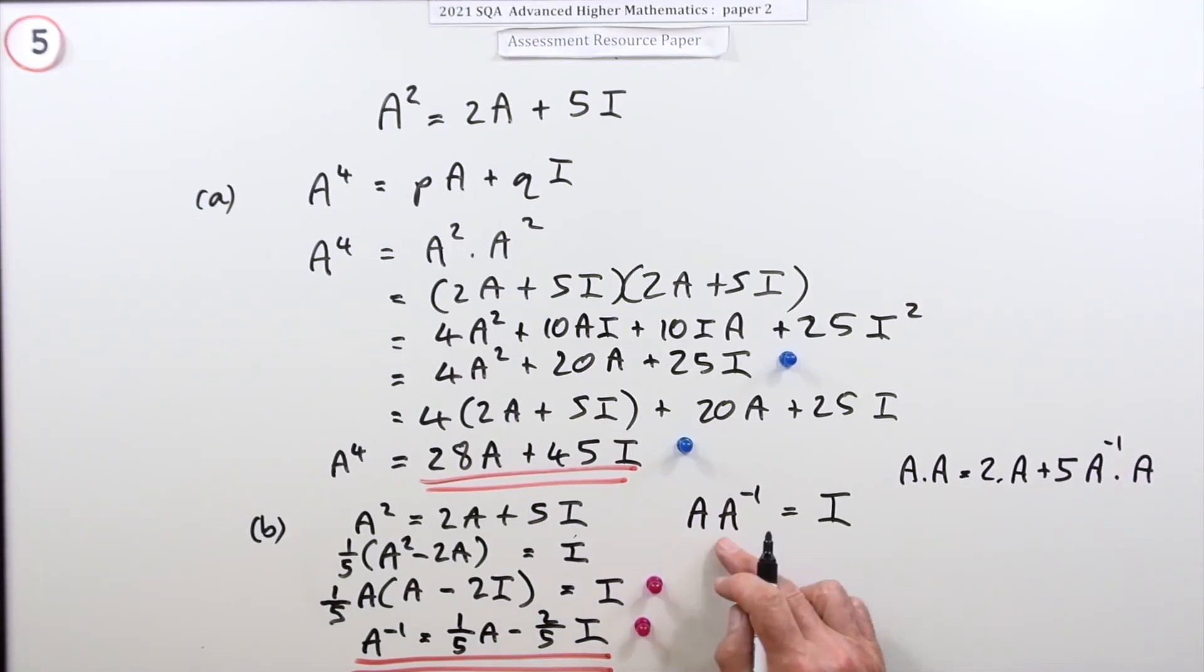Rewriting that, replacing I with the inverse times A, then you've got a common post multiplication which can be removed to read A equals—when you remove that, remember that'll be 2I—plus 5 times the inverse of A.